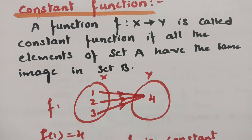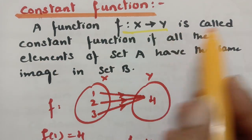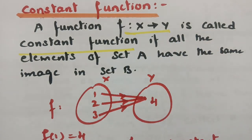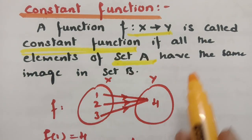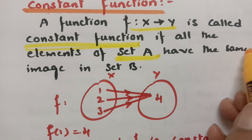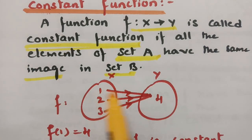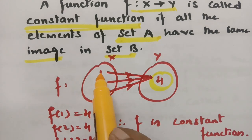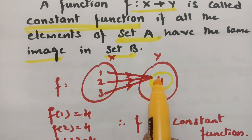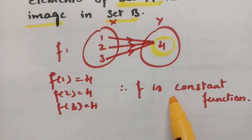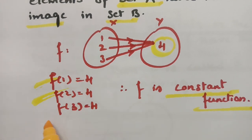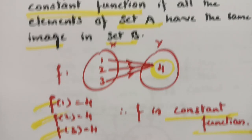Constant function: a function f mapping from x to y is called a constant function if all the elements of set a have the same image in set b. For example: 1 maps to 4, 2 maps to 4, and 3 maps to 4 — every element in set x maps to the same element in set b. So f(1) = 4, f(2) = 4, f(3) = 4, and f is a constant function.